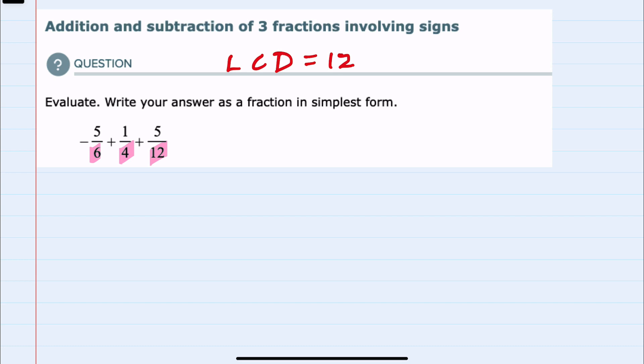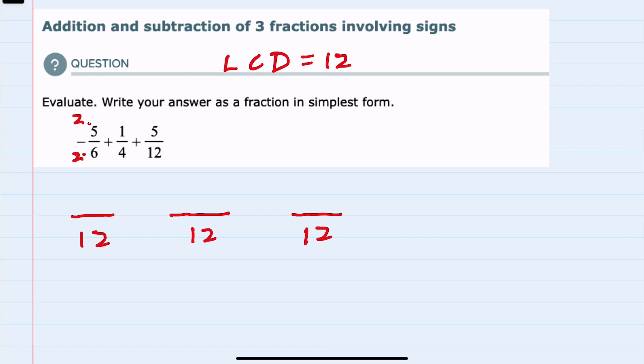So I'll be rewriting this so that each of these fractions has a denominator of 12. And starting with the first fraction, that would mean that I would need to multiply that 6 in the denominator by 2, which I can only do if I also multiply the numerator by 2. So that negative 5 times 2 would be a negative 10.